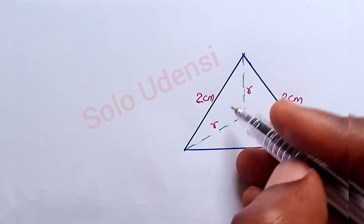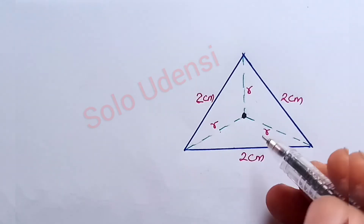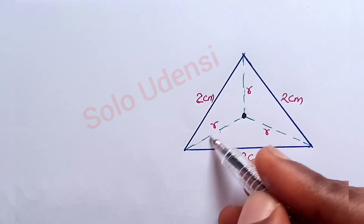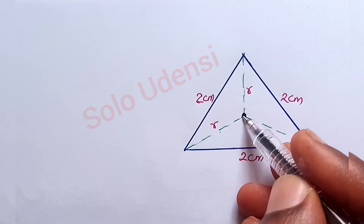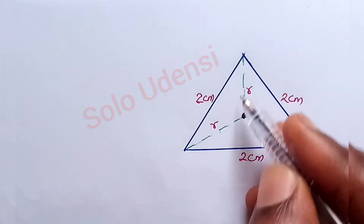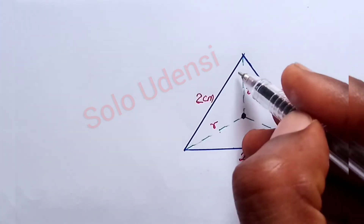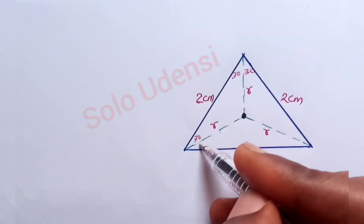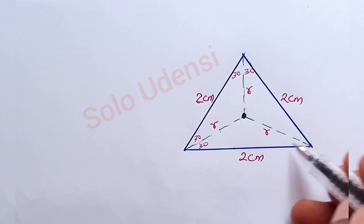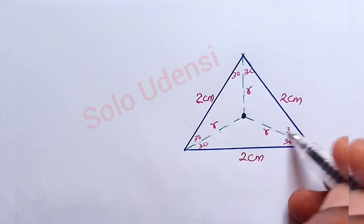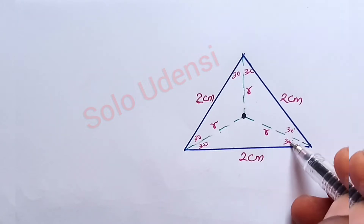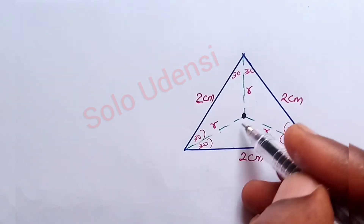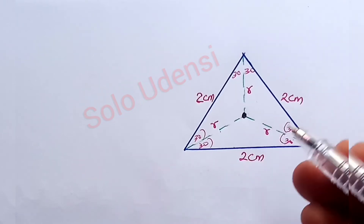This is an equilateral triangle of side 2 cm. If we bisect each angle, the bisectors meet at the center. Each bisected angle gives 30 degrees — so we have 30 degrees repeated at each vertex — and they all meet at this center point.